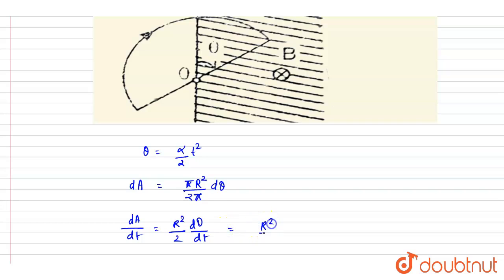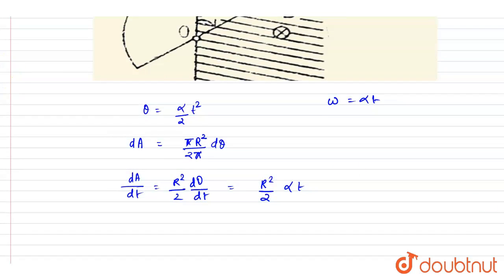We know that omega equals alpha t. So you can just put the value. So as you got the rate of change of area, you can write down the flux equals magnetic field times rate of change of area. Since magnetic field is constant, it will be alpha t.